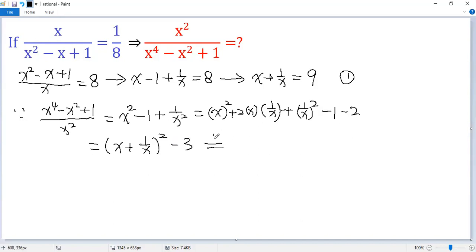Now, we know from equation 1, x plus 1 over x is 9. So, 9 squared minus 3. So, we get 81 minus 3 equals 78. So, the target expression, x squared over x to the power of 4 minus x squared plus 1, equals the reciprocal of 78.